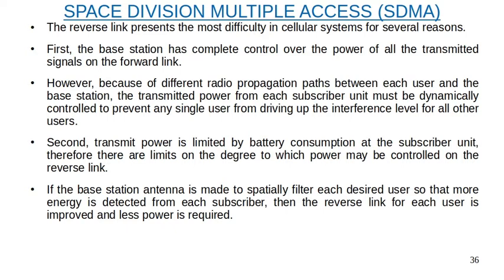Second, transmit power is limited by battery consumption at the subscriber unit. Therefore, there are limits on the degree to which power may be controlled on the reverse link. If the base station antenna is made to spatially filter each desired user so that more energy is detected from each subscriber, then the reverse link for each user is improved and less power is required.